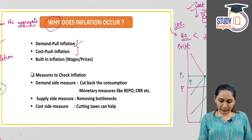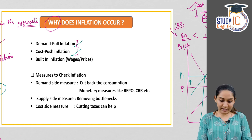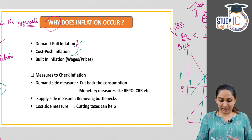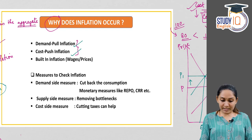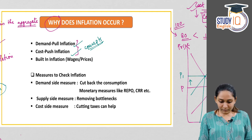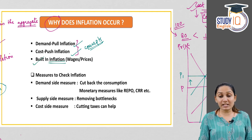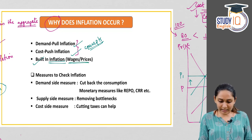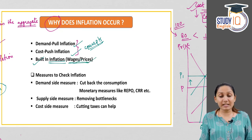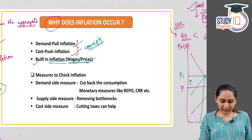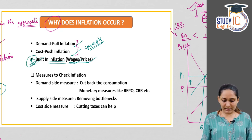Demand pull and cost push inflation are very important concepts, very helpful for examinations. Built-in inflation is inflation unnecessarily caused due to increases in wages and prices — we will be discussing built-in inflation in detail later in this chapter.